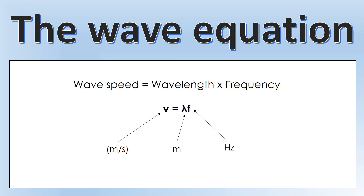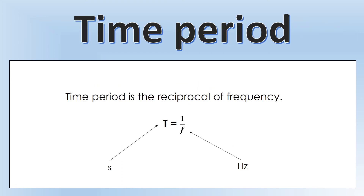The second equation links time period and frequency: time period equals one over frequency, meaning they are reciprocals of each other. Time period is measured in seconds and frequency in hertz, and from this equation you can see that one hertz is equivalent to one per second. With these two equations, if we have a wave and measure three properties, we can calculate the other two — so we don't need to measure all five quantities directly.